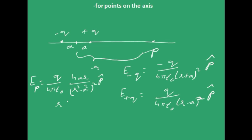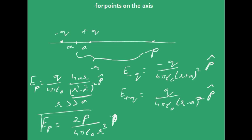After simplification, if r is very much greater than a, the a-squared term can be neglected and the denominator becomes r-squared. The formula then changes to 2P divided by 4π epsilon naught r-cubed. This is the formula for the electric field on the axial line, where P is the dipole moment. It can also be written as 2qa divided by 4π epsilon naught r-cubed times p-cap — do not write p-cap separately since P is already a vector.